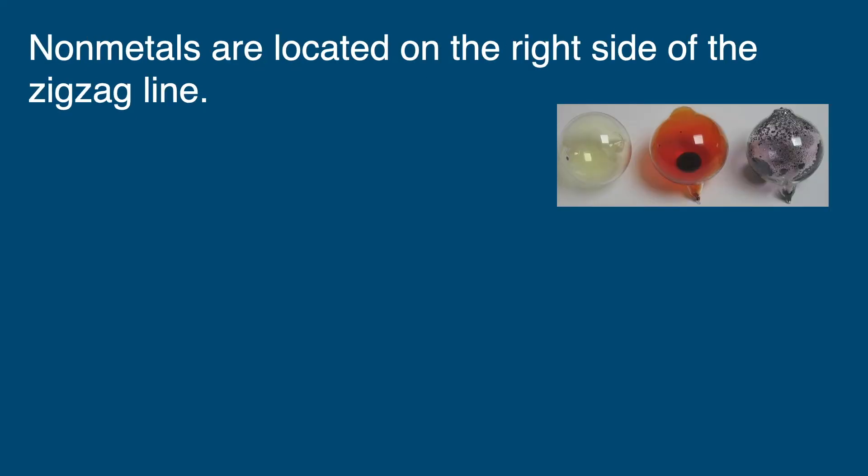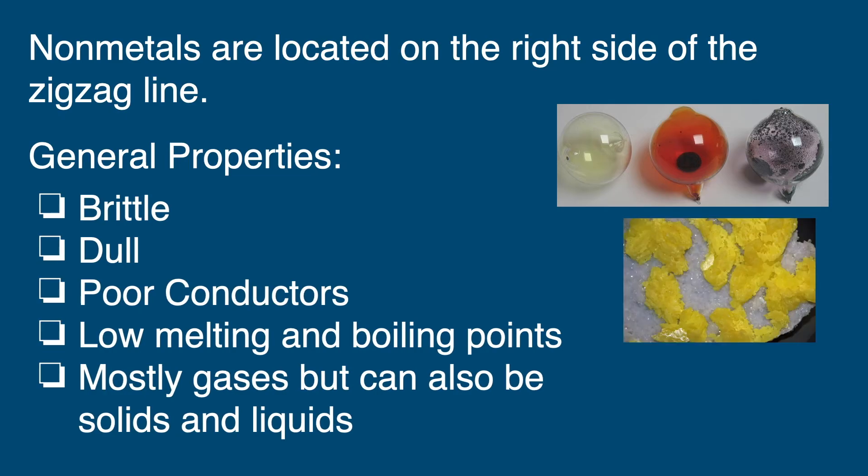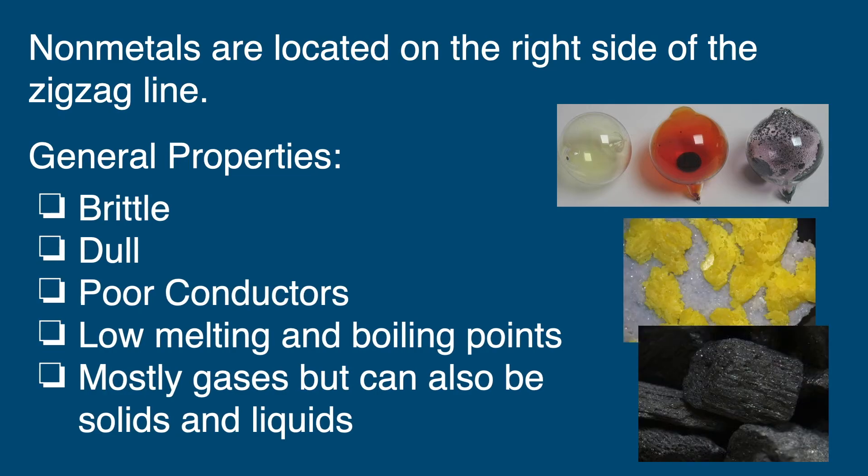Non-metals are located on the right side of that zigzag line. Some general properties of non-metals is that they are brittle and dull. They are poor conductors of heat and electricity. They have low melting and boiling points, and they're mostly gases but can also be solids or liquids.